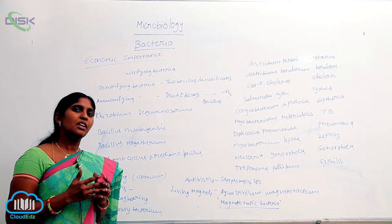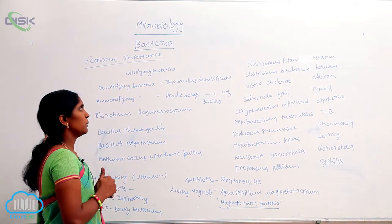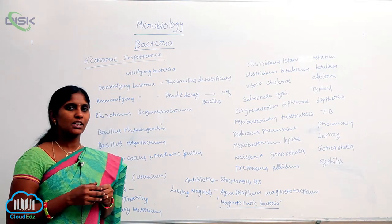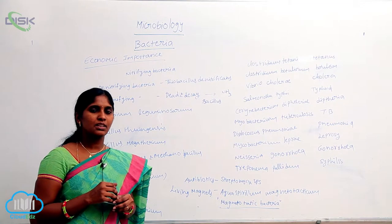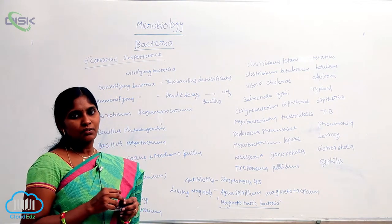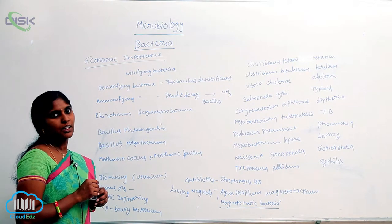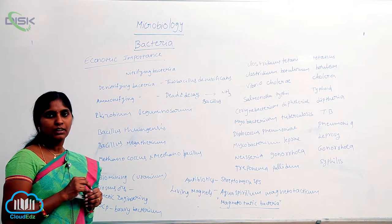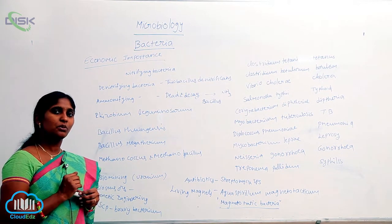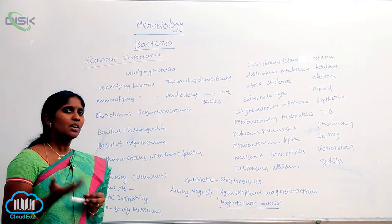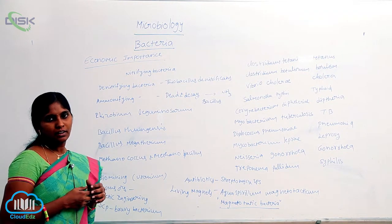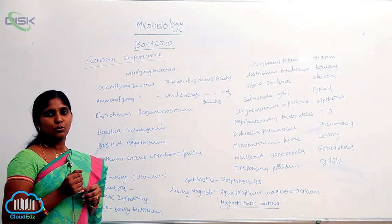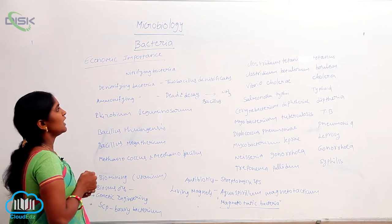When we come to the economic importance of bacteria, especially in agriculture, nitrogen is one of the basic elements found in the soil. Nitrifying bacteria can promote the oxidation of ammonia into nitrates, and nitrates into nitrites, which are then available in a usable form for plants. This process is carried out by nitrifying bacteria such as Nitrosomonas and Nitrobacter.